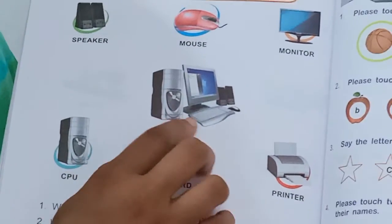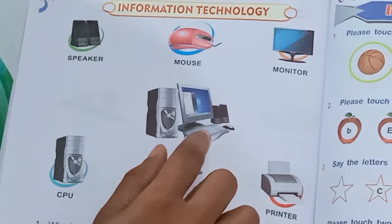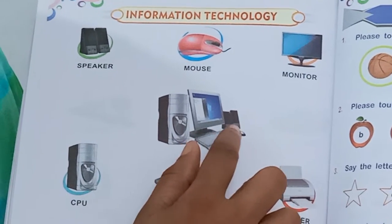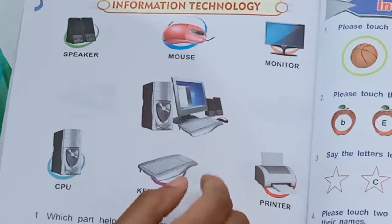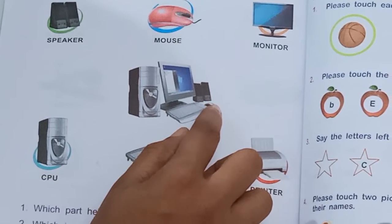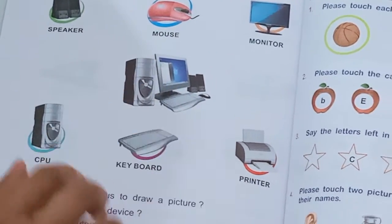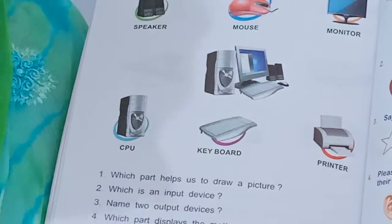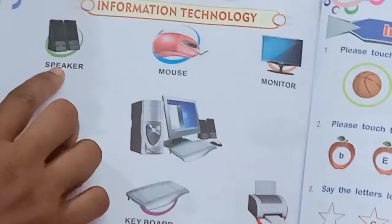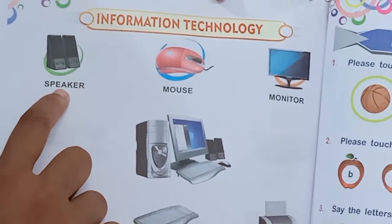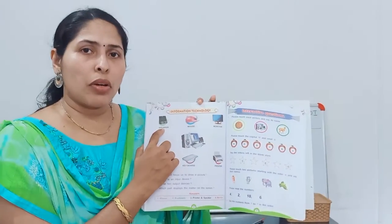What you can see: a TV, a box, a speaker, a mouse, a box.